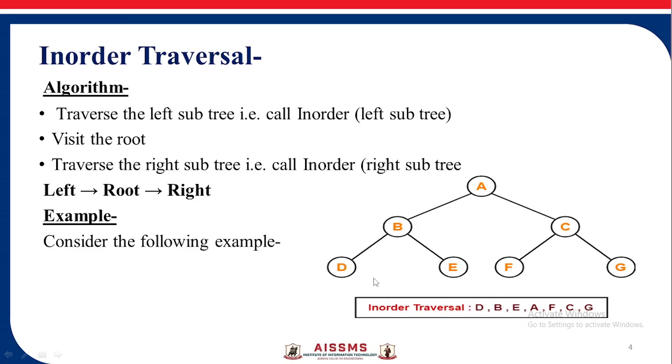We need to find out the in-order traversal. So we will traverse the left, that is D, then root B, then right E, then again here A, then right side. Again we will do left-root-right, so it will be F, then C, then G. So we get the sequence as D, B, E, A, F, C, G.